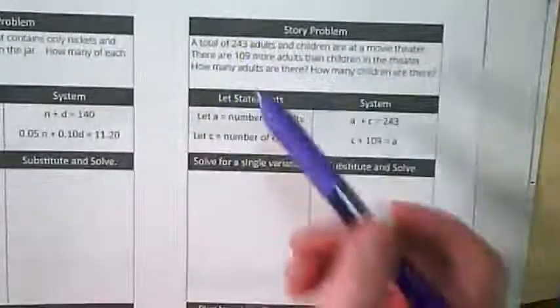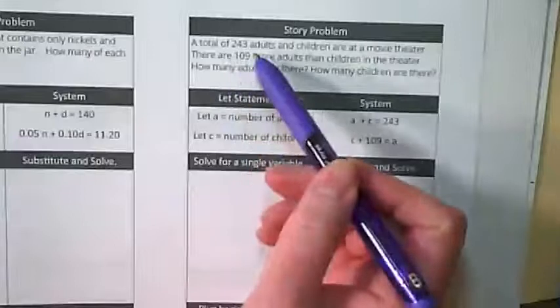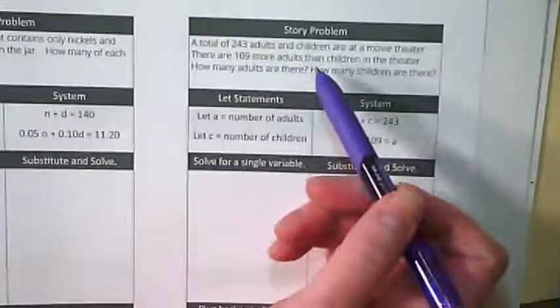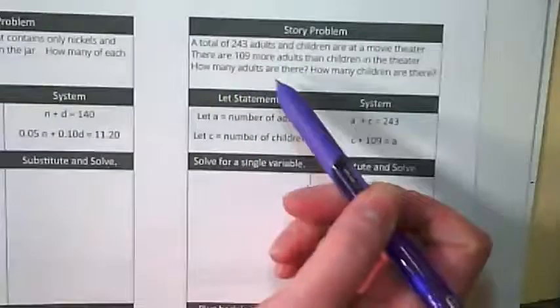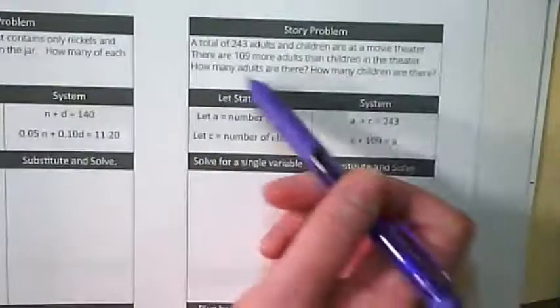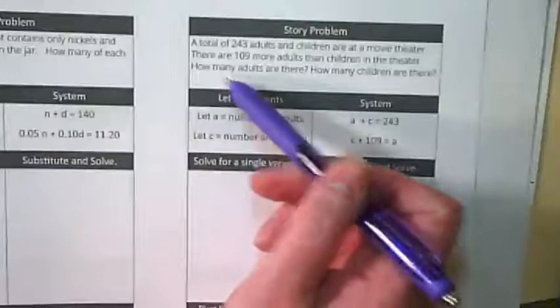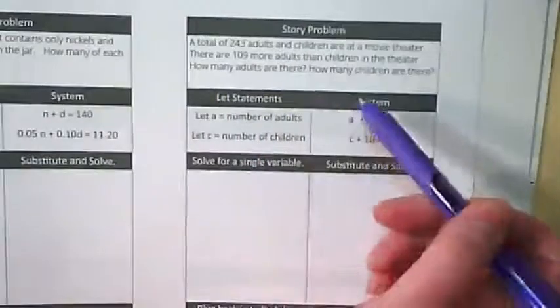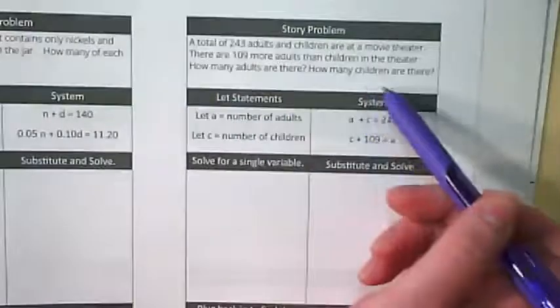All right. So this problem reads a total of 243 adults and children are at a movie theater. There are 109 more adults than children in the theater. The question is, how many adults are there? The second question, how many children are there?